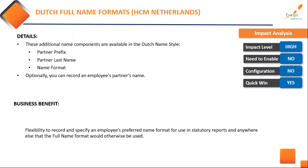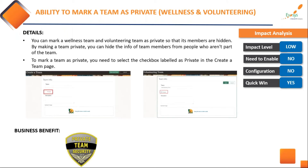For customers from the Netherlands, there is now a full name format option allowing employees to choose the partner name format style. When capturing partner information, you can choose what the style of the full name should be, providing more flexibility to the employee. For customers using wellness and volunteering, you now have the ability to mark a particular team as private — a restricted group — so that team members are hidden, enabling a private conversation just like a private chat on any messaging app.